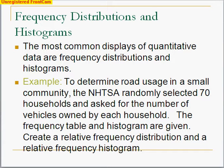Here's the example we're going to use to give us a feel for this first problem. To determine road usage in a small community, the NHTSA, which is basically the highway transportation agency, randomly selected 70 households and asked for the number of vehicles owned by each household. The frequency table and histogram are given, and we are going to create a relative frequency distribution and a relative frequency histogram.